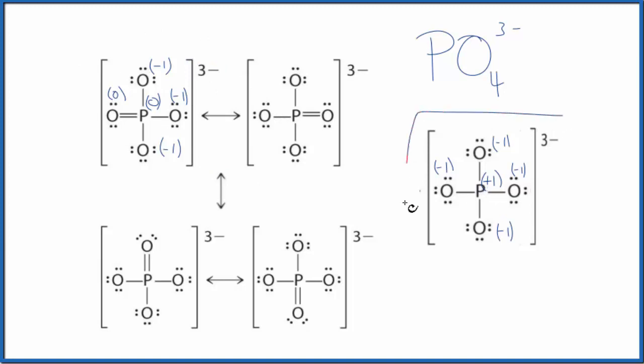So this right here is what we consider a minor resonance structure. These here will be the major Lewis structures. They're considered equivalent Lewis structures just because we're moving the double bond around in different places.